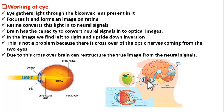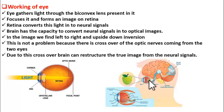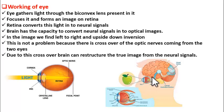Until and unless the signals reach the brain we cannot perceive the object, even though the image is formed on the retina. So the image forms on the retina, but we don't perceive it unless the signal reaches the brain. This is how the image is perceived by us when light from an object passes through our eye.